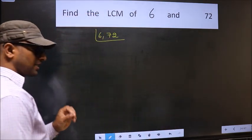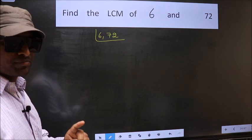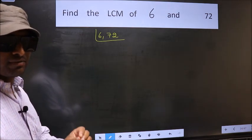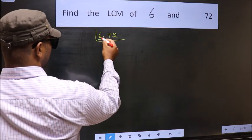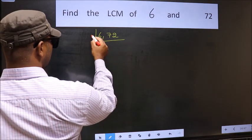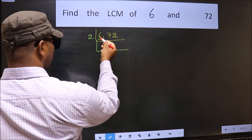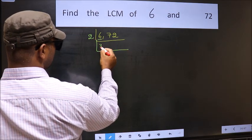This is step 1. Now focus on the first number, which is 6. 6 is even, so take 2. When do we get 6 in the 2 table? 2 times 3 is 6.